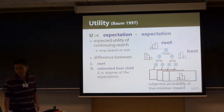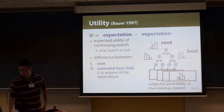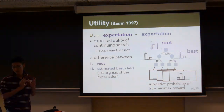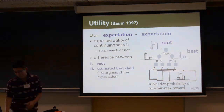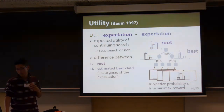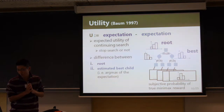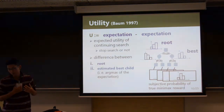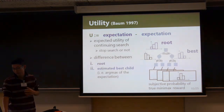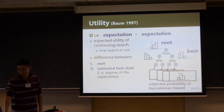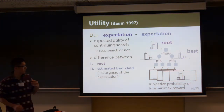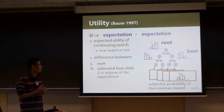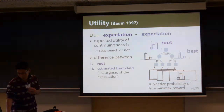I explain U-value, which is used in BA and our exploration strategy. U-value is a value defined to evaluate the expected utility of continuing search. Under an assumption that the distribution in leaves is a subjective probability of the true minimax value, BA decides whether it should stop search or not by comparing U-value with the estimated cost of continuing search. If it continues, it chooses a leaf based on U-value.